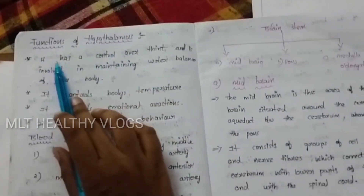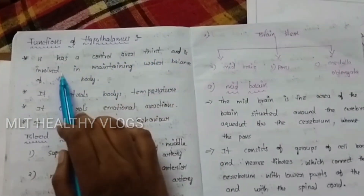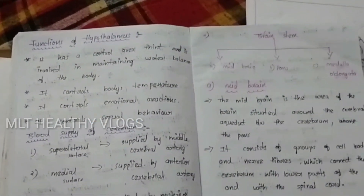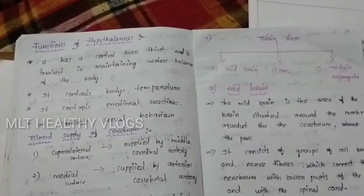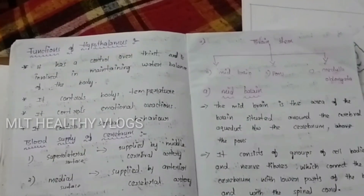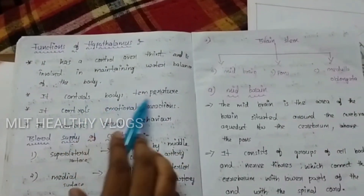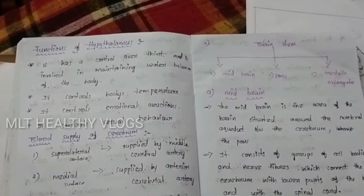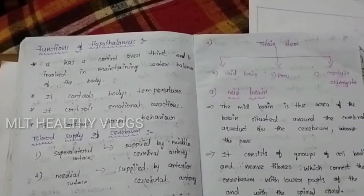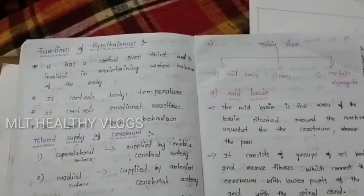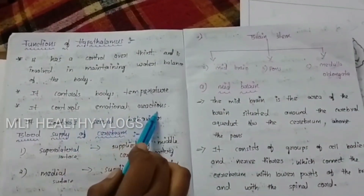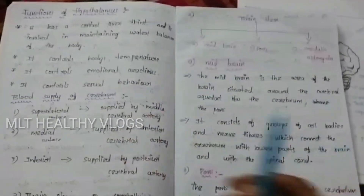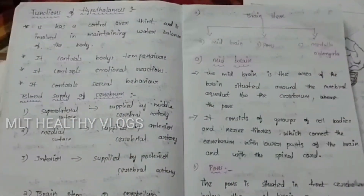Functions of the hypothalamus: it has control over the maintenance of water balance and body temperature. Our body temperature is regulated by the hypothalamus. It also controls emotional reactions.